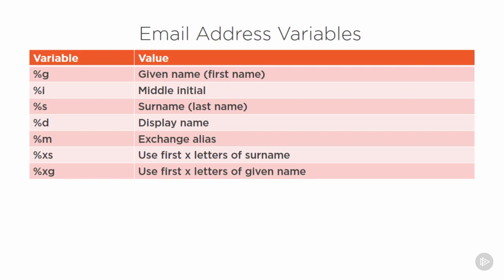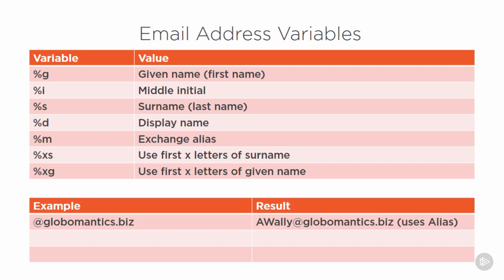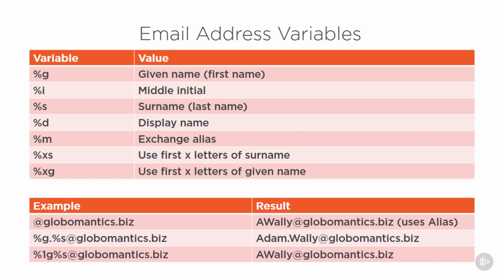When configuring your email address policy, the email addresses assigned are based on variables such as given name, middle initial, surname, display name, and Exchange alias. You can also use the first one, two, or three letters of the surname and given name. If the policy is just assigning an @globomantics.biz address, it defaults to using the Exchange alias. If you want something different, you could use first name dot surname — so %G.%S@globomantics.biz, or %1G%S@globomantics.biz, which would give you a.wally@globomantics.biz.